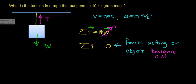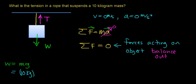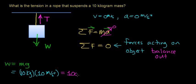One of the things we can do right away is figure out the weight of this object. The weight equals the mass times the gravitational acceleration. This object has a mass of 10 kilograms, and for the purposes of this video we're going to assume the acceleration due to gravity is 10 meters per second squared — we know it's really 9.8, but we'll use 10 to keep the multiplication easy. So 10 kilograms times 10 meters per second squared works out to be 100 newtons.